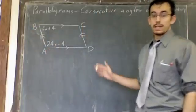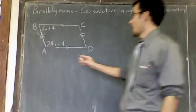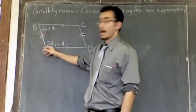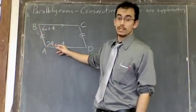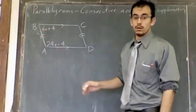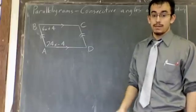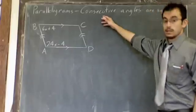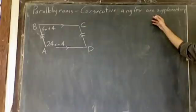Okay, in this particular parallelogram, we've got angle A and angle B. Angle A is 24x minus 4. Angle B is 6x plus 4. What we know about consecutive angles is that they're supplementary. Consecutive angles are supplementary.